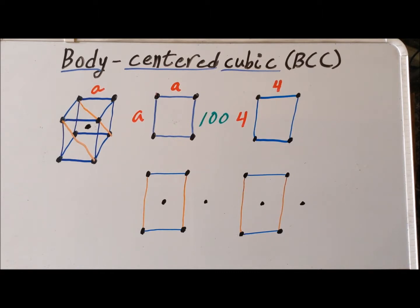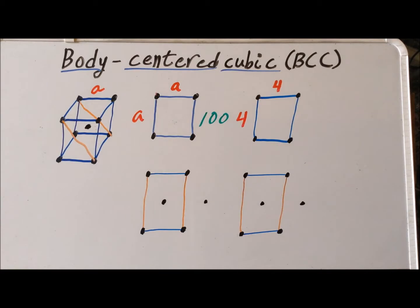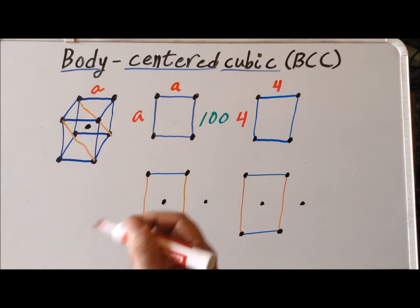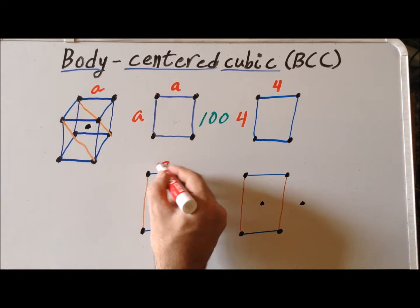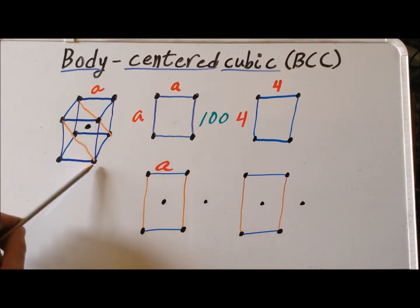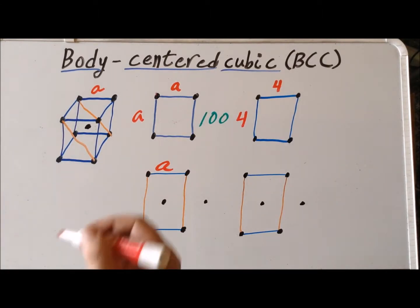And it has several important features. The first important feature is that it has an atom in the center. Not only do we have a rectangular shape here, but exactly in the center of this rectangle we have an atom of exactly the same type as those at the vertices. We know that this particular distance here is A because we have a cube, so this distance has to be A as well. We know that along this diagonal, because we have a square, this length of the orange line is going to be square root of 2 times A.